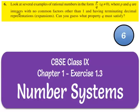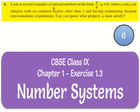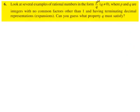Let us move on to the sixth question. The question is, look at several examples of rational numbers in the form of p by q, where q is not equal to 0, where p and q are integers with no common factors other than 1 and having terminating decimal representations. Can you guess what property q must satisfy?